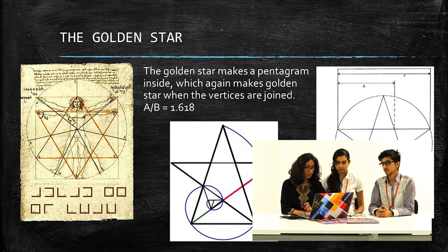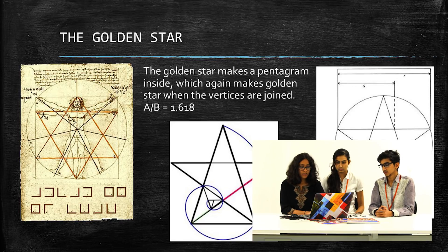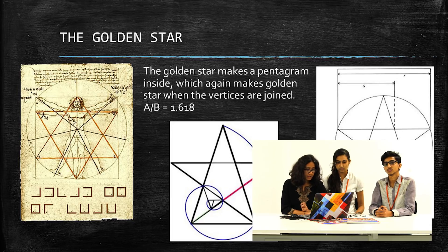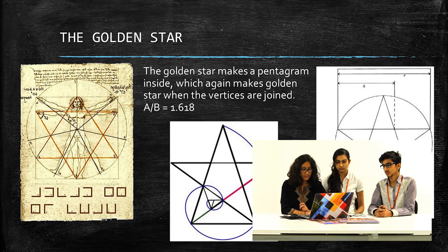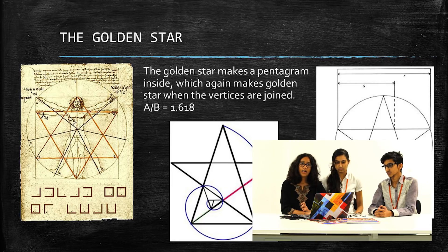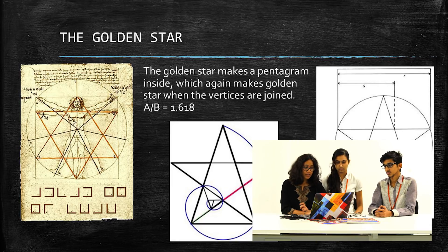If we look at the golden star, there is a triangle over its head. Looking at the triangle, it is an isosceles triangle. Its hypotenuse to base is in golden ratio. This has been used in many paintings by Johanna Lutardi.